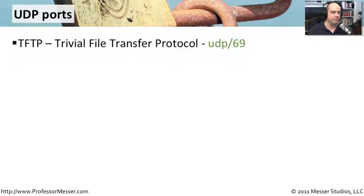The first is TFTP. That stands for Trivial File Transfer Protocol. It's an unencrypted and very simple file transfer method. It uses UDP over port 69.